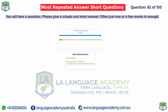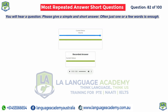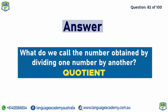What do we call the number obtained by dividing one number by another? Quotient.